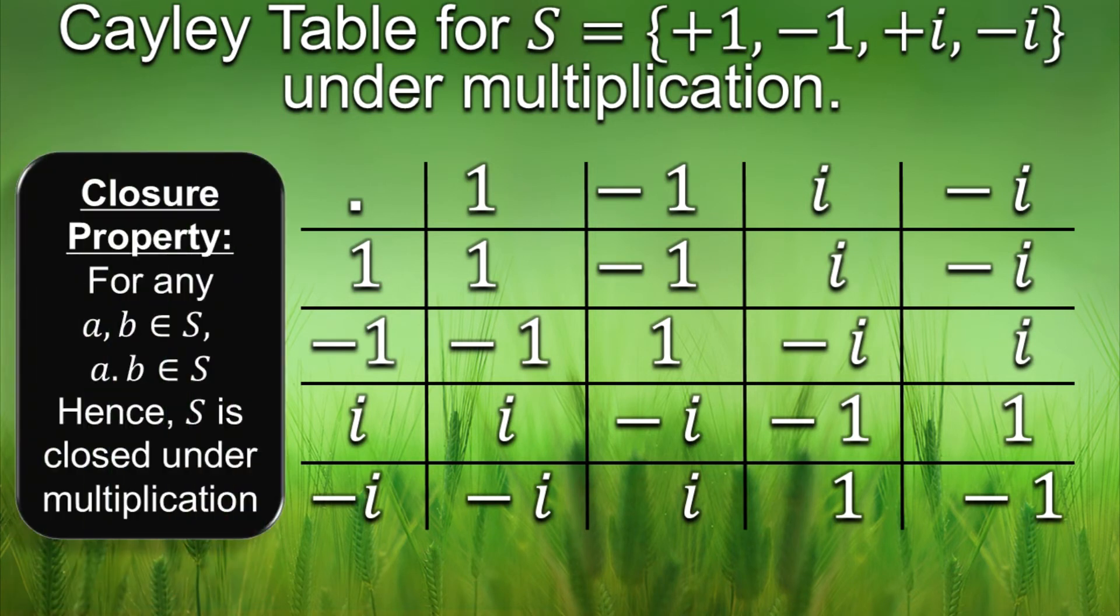Alright the first property is closure. As you can see every two elements in S being multiplied with each other gives a unique answer that also belongs to S. Hence S is closed under multiplication.